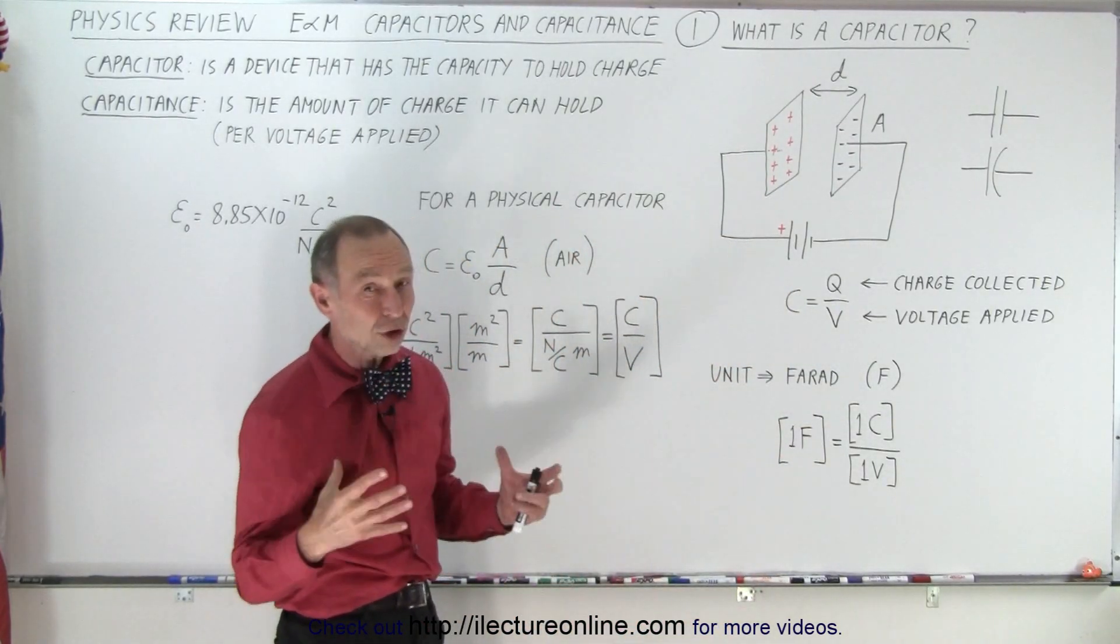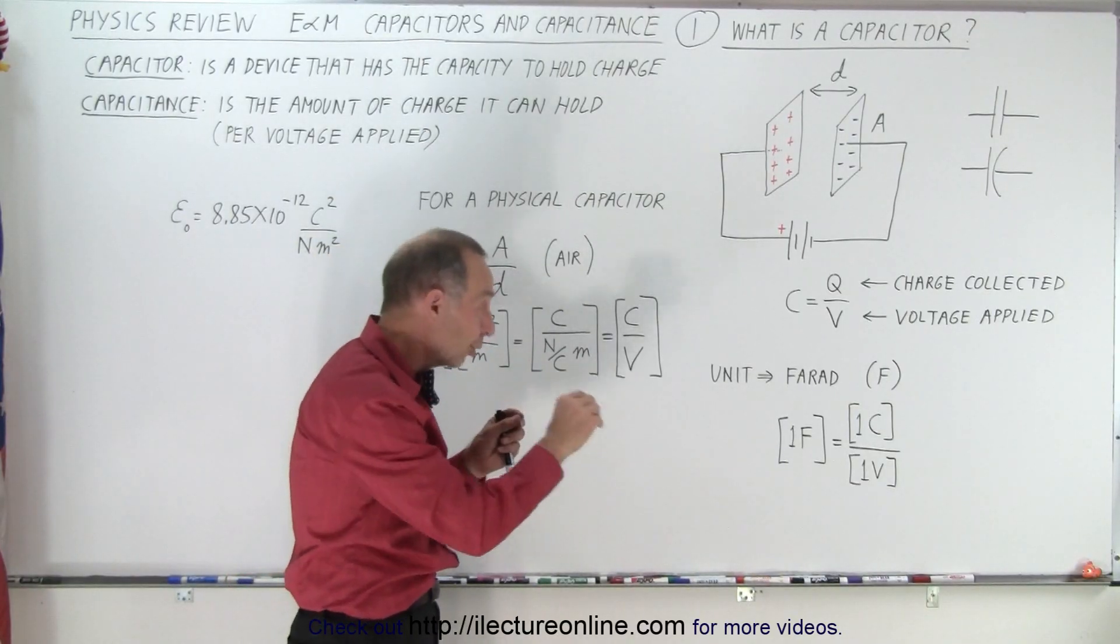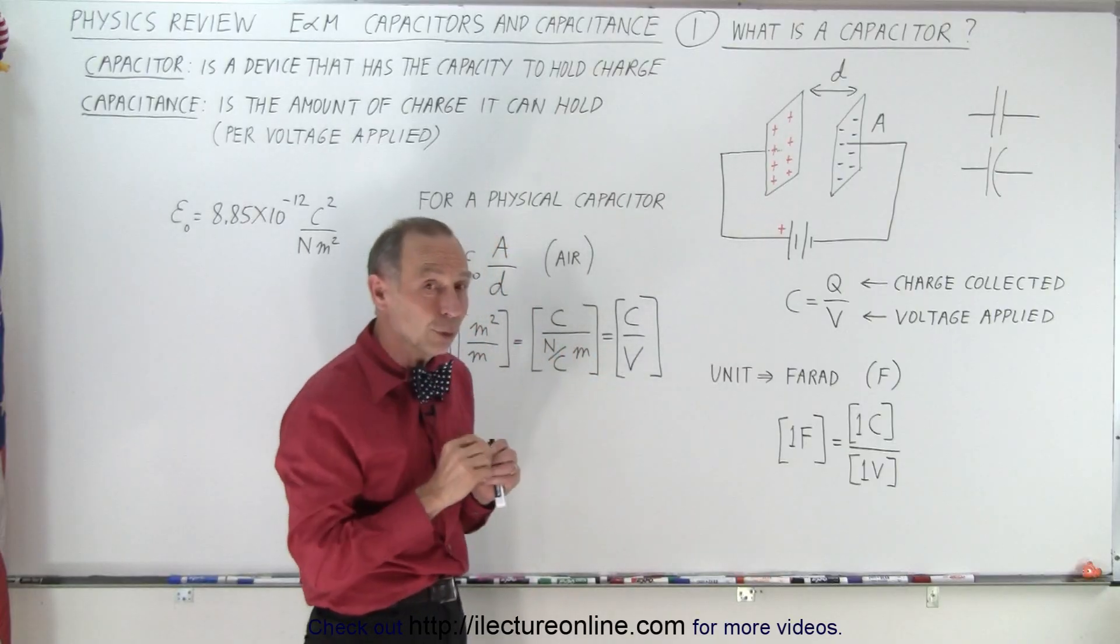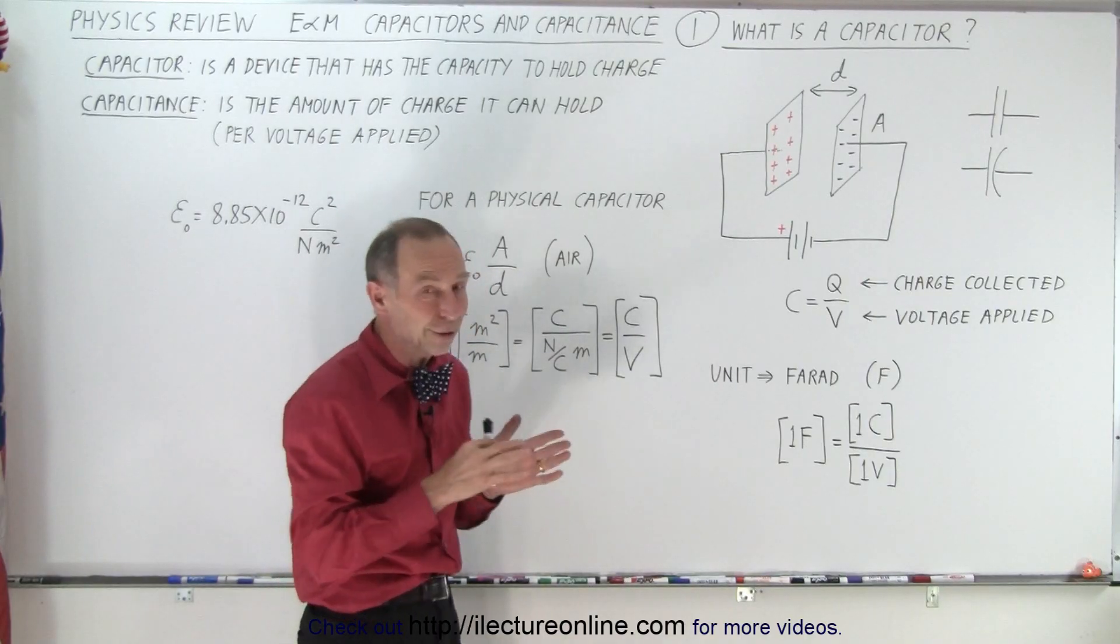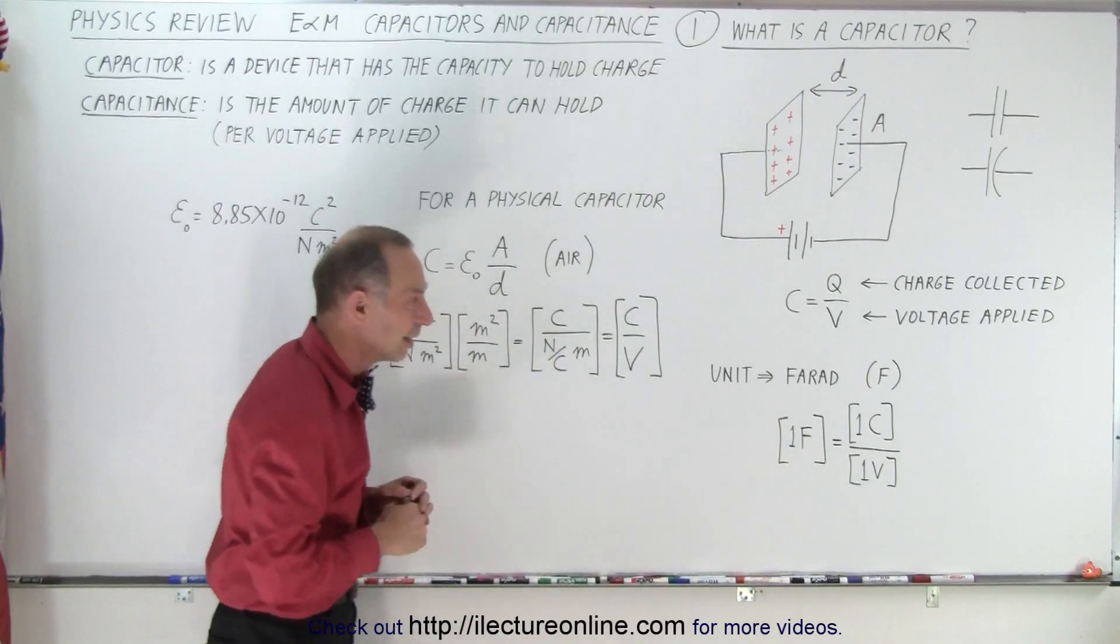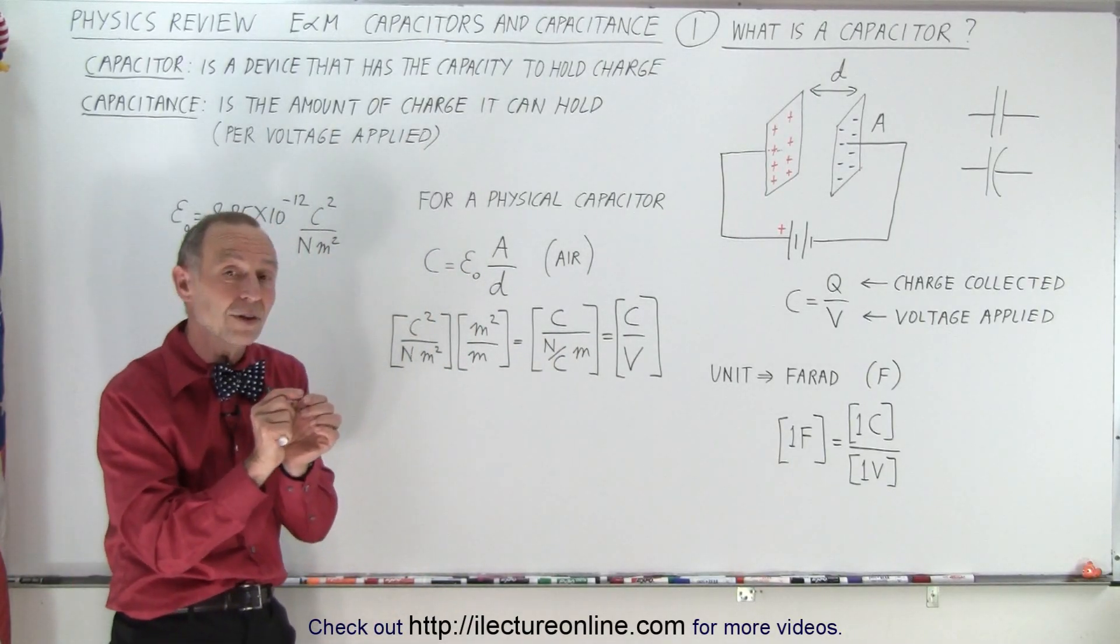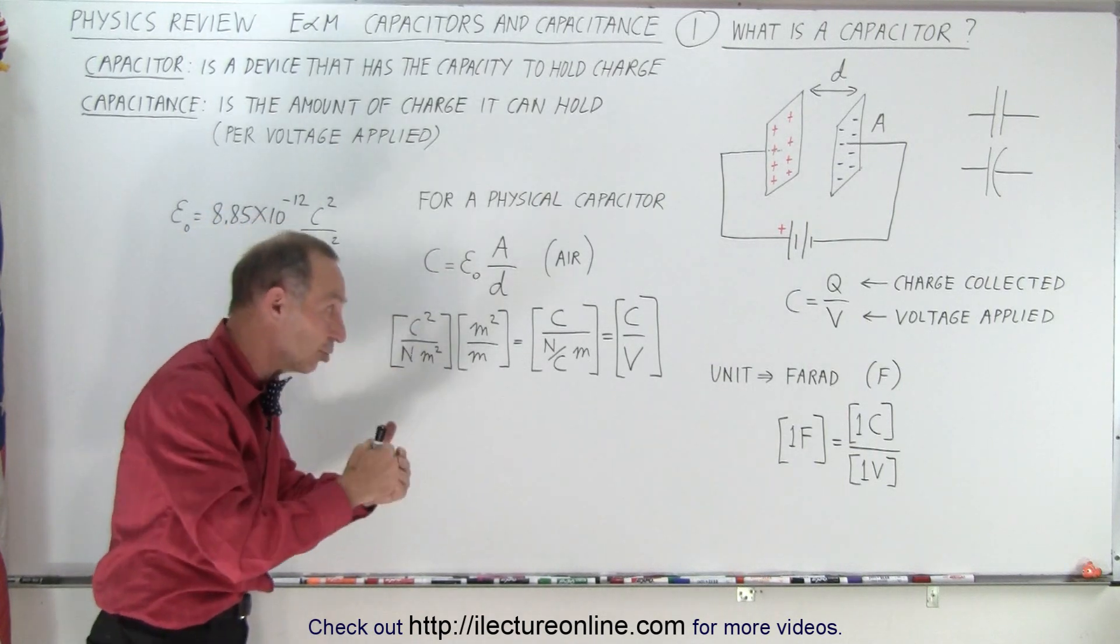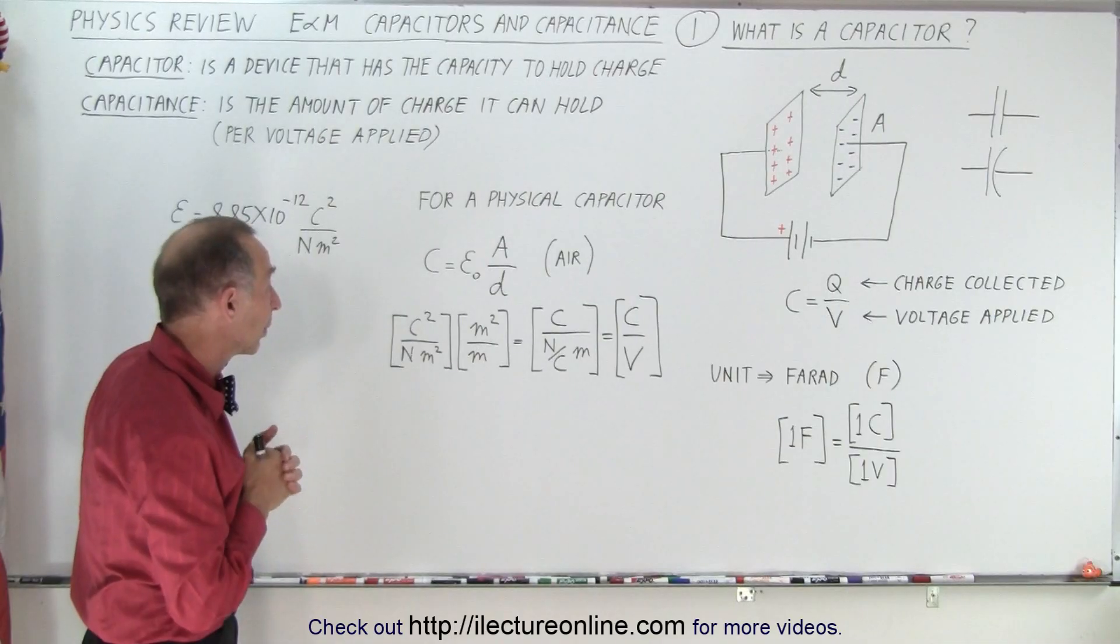But typically a coulomb is a lot of charge and so normally on a capacitor you can only store a small fraction of a coulomb when you apply a reasonable voltage on there. So usually you don't see a lot of one Farad capacitors although with modern technology they've been able to miniaturize the ability to store an enormous amount of charge on very small capacitors. So they've actually come up quite a way along with it.